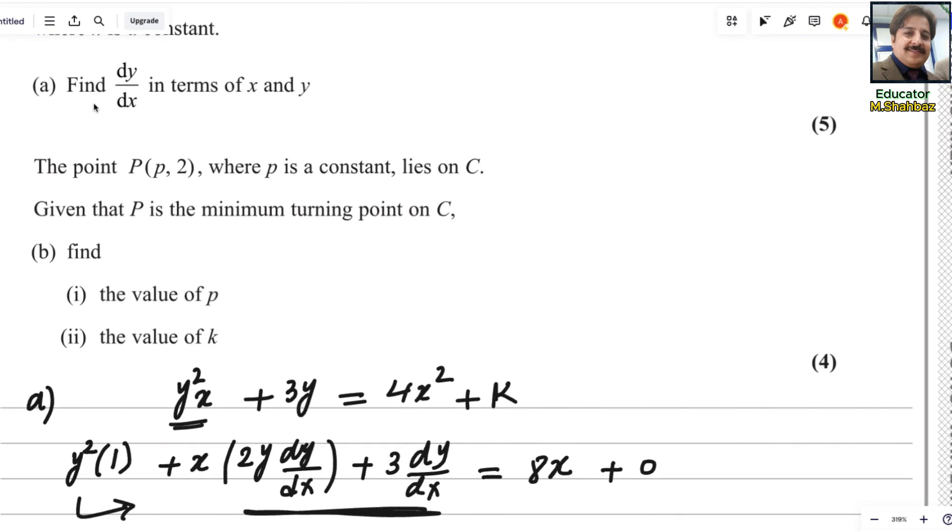For the second part, the point P(p, 2), where p is a constant, lies on C. Given that P is the minimum turning point. Find the value of p. You know that for minimum turning point, or maximum turning point, whenever it is given like that, or if using the word stationary point, we always take the first derivative dy/dx equals 0. This is a big hint for these type of questions. So let us start to find the value of p.